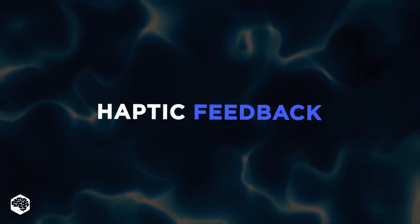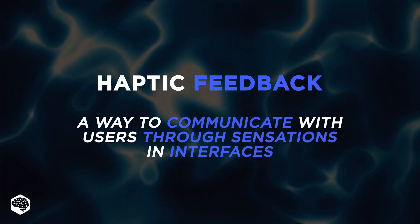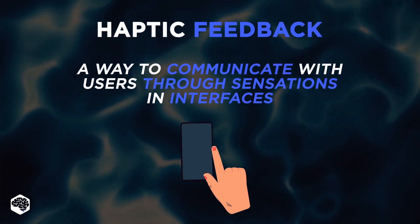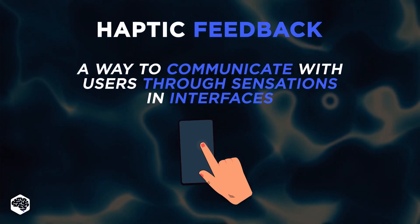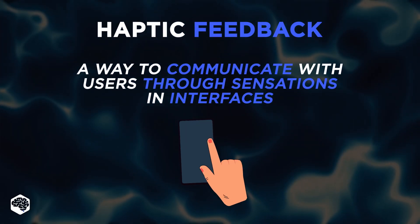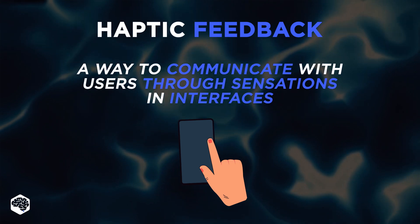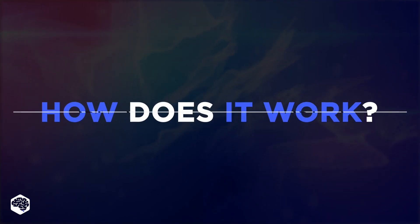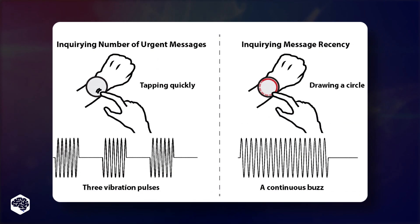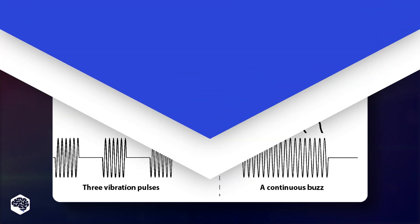Haptic feedback is a way to communicate with users through sensations in interfaces to convey information to the end user through touch. How does it work? Tactile technology generates computer signals that are perceived through touch. It integrates human and machine parts.